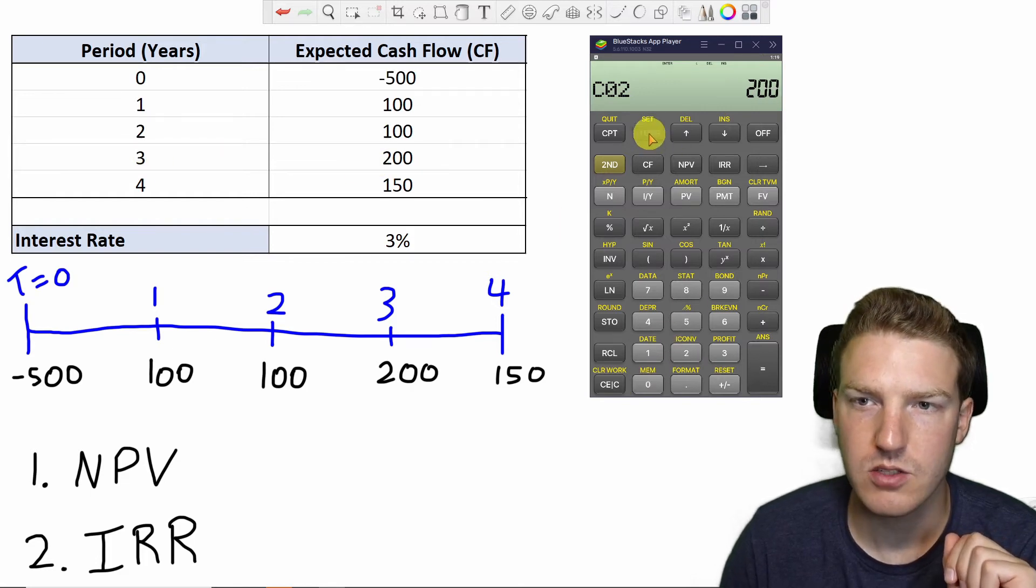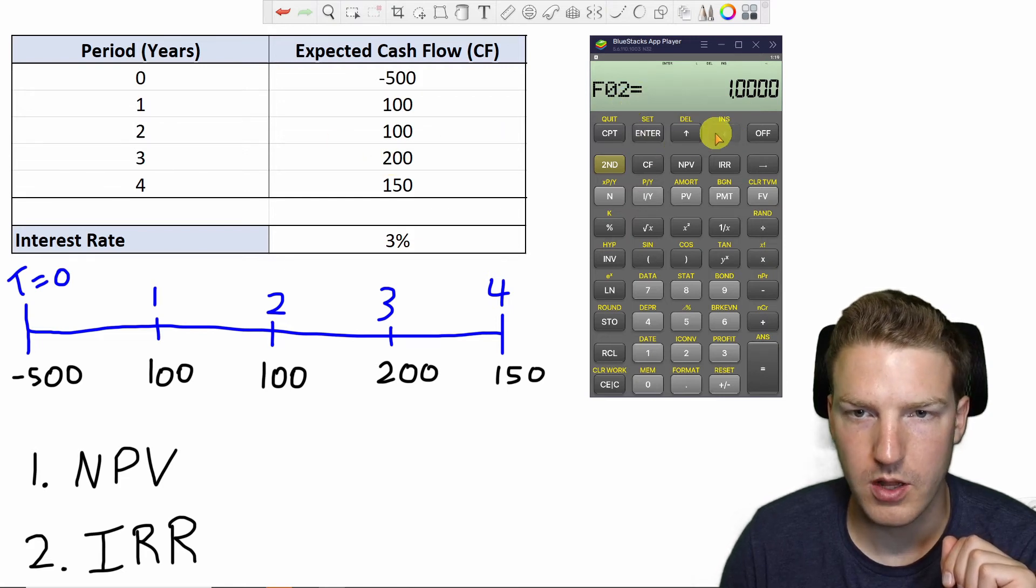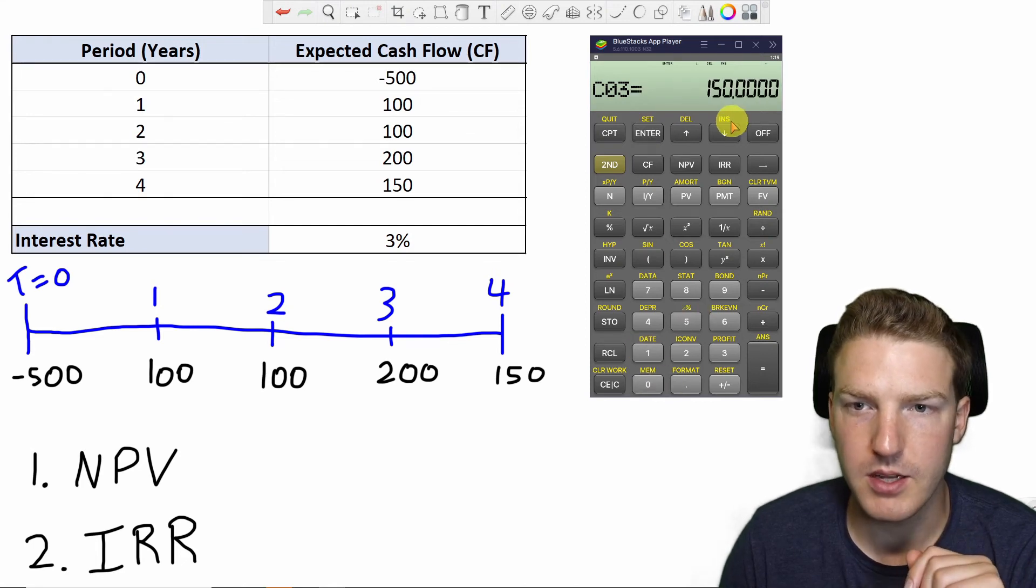now period three becomes cash flow two, which is $200. And we'll hit enter. And this one has a frequency of just one $200 payment. And then finally, we'll have a cash flow of $150 and we'll hit enter.